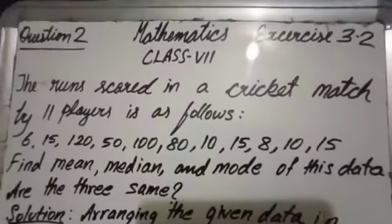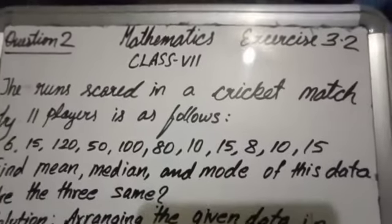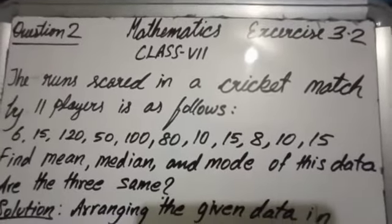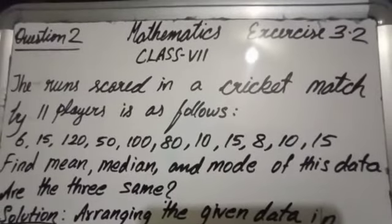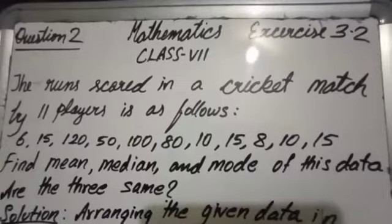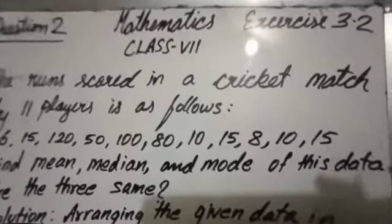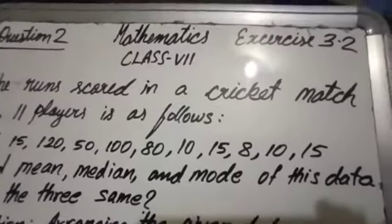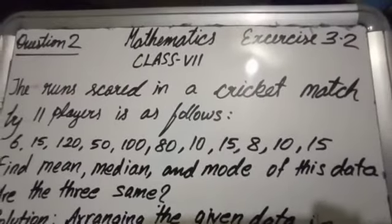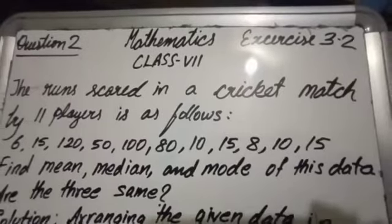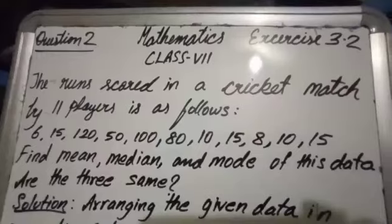Dear students, let us start question number 2. The runs scored in a cricket match by 11 players is as follows: 6, 15, 20, 20, 50, 100, 80, 10, 15, 8, 10, 15. Find the mean, median, and mode of this data. Then they are asking are the three same?